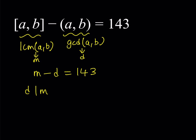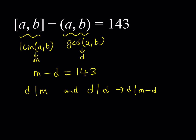Another fact is that D divides itself. When you put these two together — D divides M and D divides D — we know that if D divides two different things, it also divides their sum, their difference, or any type of linear combination. So this implies that D divides M minus D, and since M minus D equals 143, this implies that D divides 143.